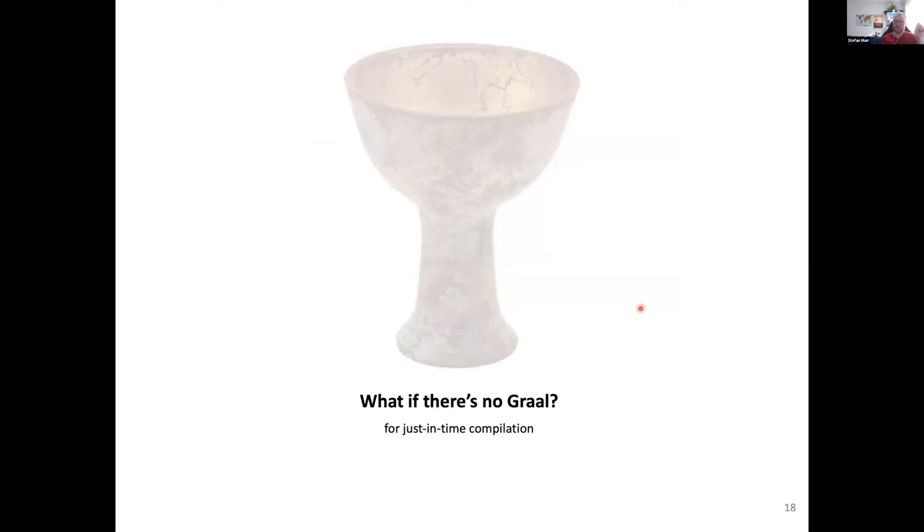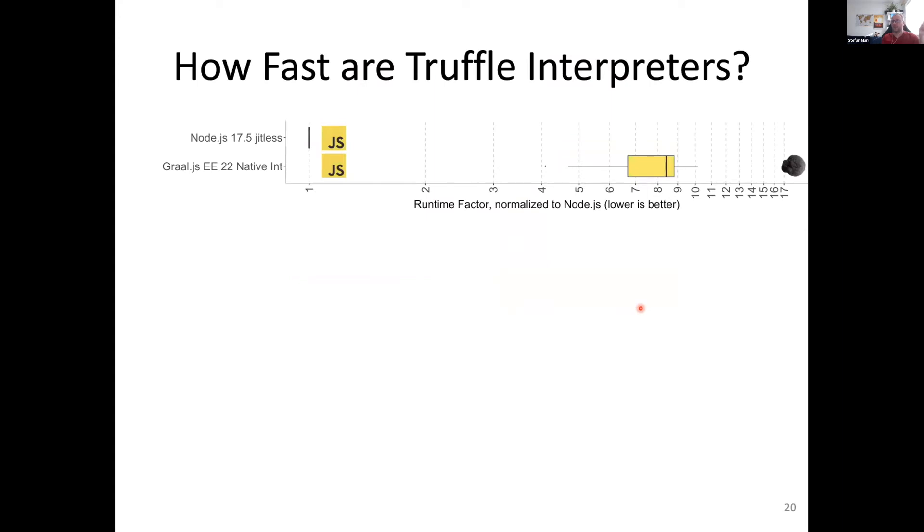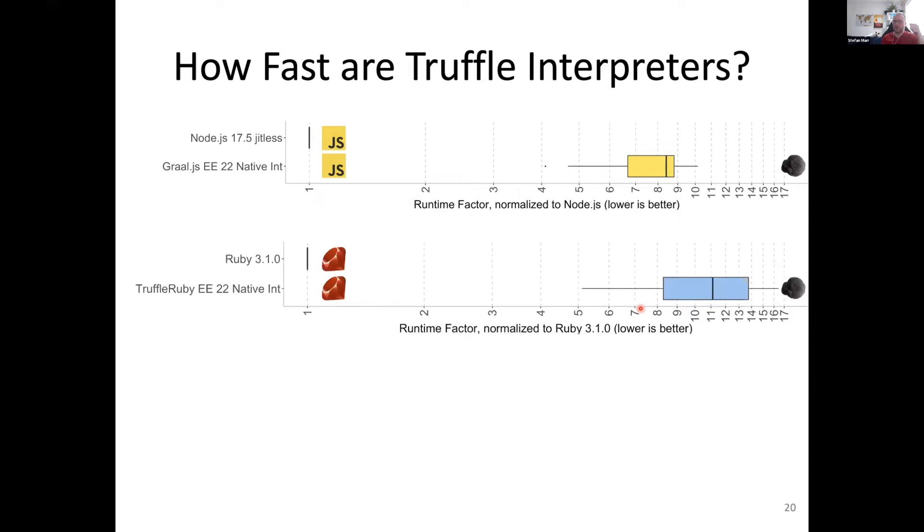Let's look at how performance looks like if we actually disable Graal compilation. Same interpreter, we just tell it not to compile anything. When I look at Node.js here as a baseline, and compare that to Graal.js Enterprise Edition, we see almost an order of magnitude, the interpreter being slower than the JITLESS version of Node.js. The same is true for TruffleRuby. Again, about an order of magnitude slower. Python doesn't look very different. Again, about an order of magnitude slower.